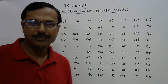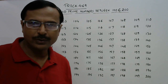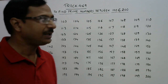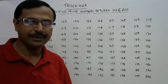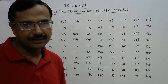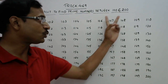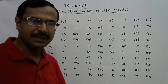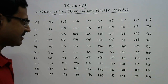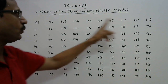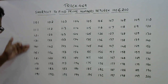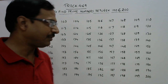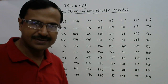Hello friends, in trick number 469 I am going to tell you a method through which you will be able to find out all the prime numbers between 100 and 200. There are 21 prime numbers between these two numbers. I have written all the numbers from 101 to 200 in the form of a 10 by 10 matrix, with 101 to 110 in the first row. This matrix will help us find all the prime numbers very easily.